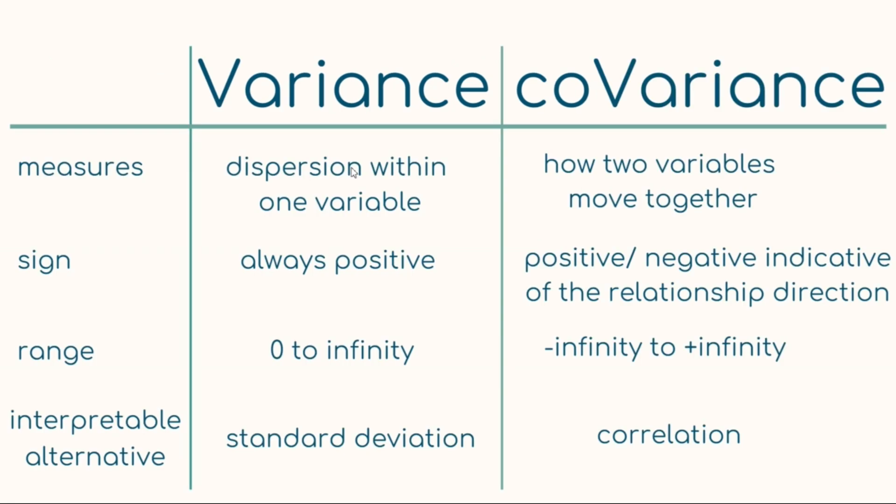Now, let's sum up everything that we've learned. So, while the variance measures the dispersion within one variable, covariance shows us how two variables move together, in a positive direction or in a negative direction. The variance is always going to be positive, while covariance can be either positive or negative, indicative of the relationship direction between x and y. Variance ranges between 0 and infinity, due to the fact that we square all the distances to the mean, while the covariance can range between minus to plus infinity. The more interpretable alternatives to variance is the standard deviation, which indicates the distance from the mean inside a distribution. And the interpretable alternative for covariance is the correlation, which takes values between minus one and one, because it is a standardized version of the covariance.